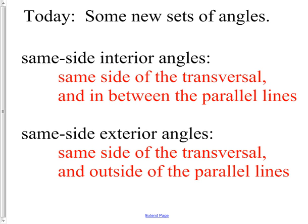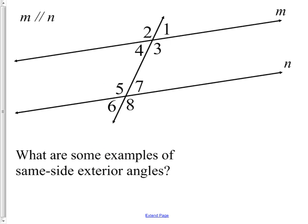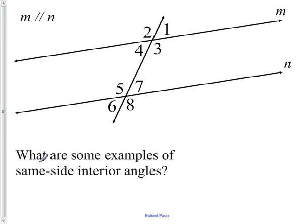There are three more terms for today. The next two are called same side interior and same side exterior. Same side interior angles are on the same side of the transversal and they're in between the parallel lines. Examples would be like angles three and seven, and also angles four and five.